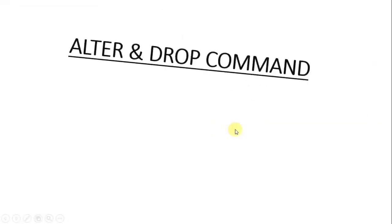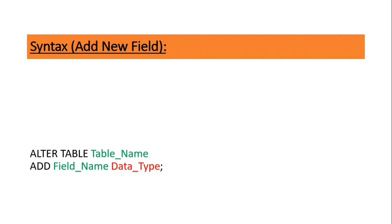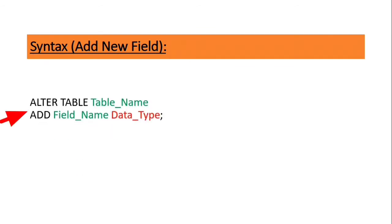Now we will learn about ALTER and DROP commands. We can add a new field by using ALTER command and delete any field by using DROP command. Here you can see the syntax to add a new field: ALTER TABLE, then the table name, then on the next line ADD, then field name, then space, data type, and finally a semicolon.